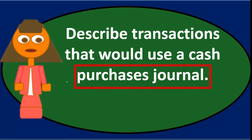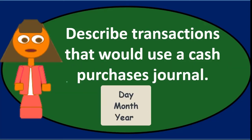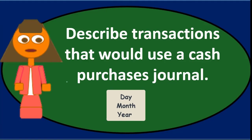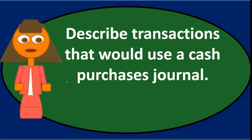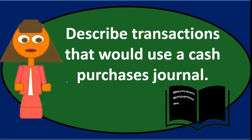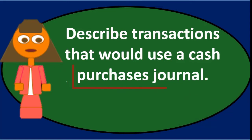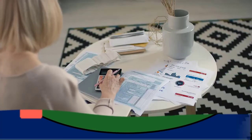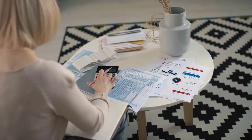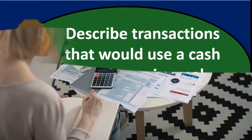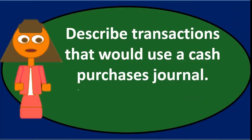The purchases journal accumulates transactions over a time period — typically a month. Once the month is over, we sum up that information in the purchases journal and record it to the general journal as just one transaction for that month, rather than recording every transaction one by one. We then post that to the general ledger, and from the general ledger we can produce the trial balance and financial statements.